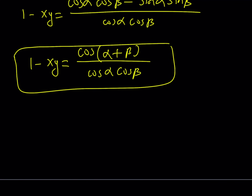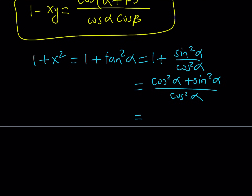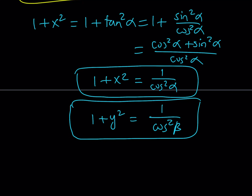Now we're going to look at 1 plus x squared and 1 plus y squared — they're going to be similar. For 1 plus x squared, replacing x with tangent alpha gives 1 plus tangent squared alpha. Writing tangent as sine over cosine and making a common denominator, using the Pythagorean identity cosine squared plus sine squared equals 1, we get 1 over cosine squared alpha — or secant squared alpha. Similarly, 1 plus y squared equals 1 over cosine squared beta.